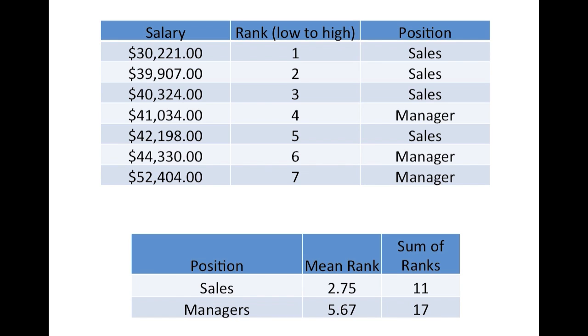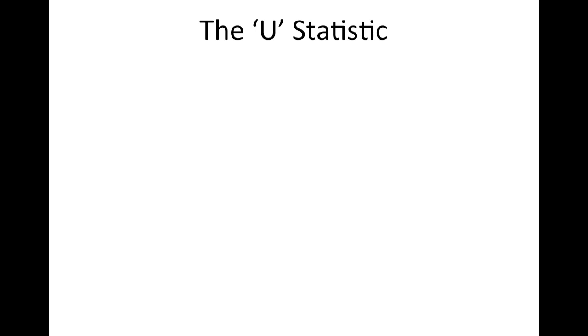And we note the sum of the ranks for each. In this case, the sum of the ranks were 11 for sales staff and 17 for managers. We'll then use this information in calculating the U statistic.